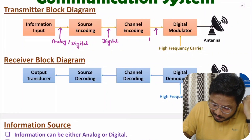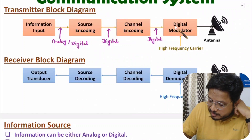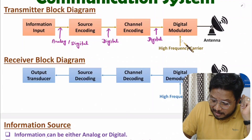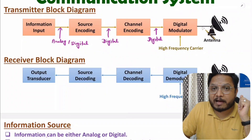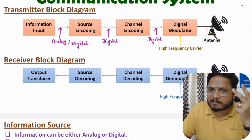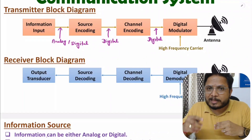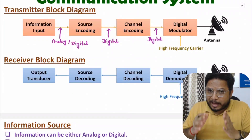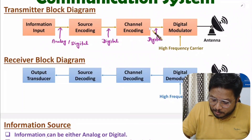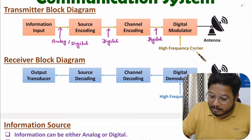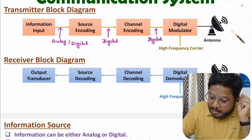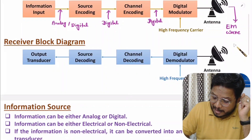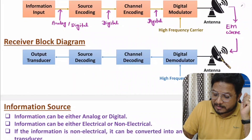This digital data is then given to a digital modulator. The digital modulator has another input signal, which is a high frequency carrier signal. With the use of the digital modulator, we will have a high frequency signal that can be easily transmitted using an antenna. So our goal is to transmit the signal at higher frequency, and for that we use the digital modulator. The modulated high frequency signal is transmitted as an EM wave.